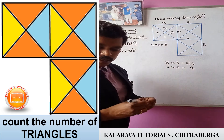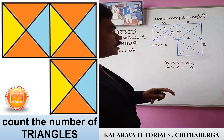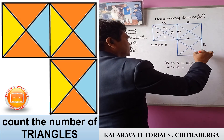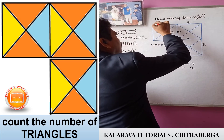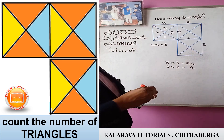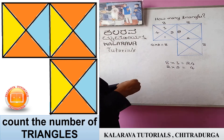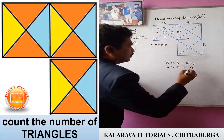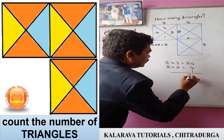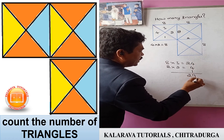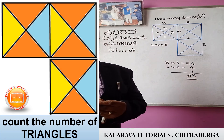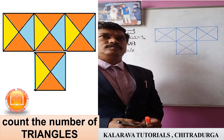Another one we have to consider: there is another triangle — the longest triangle. We have to consider one more triangle. So this is one triangle: 24, plus 4 is 28, plus 1 is 29. There are 29 triangles in this diagram.